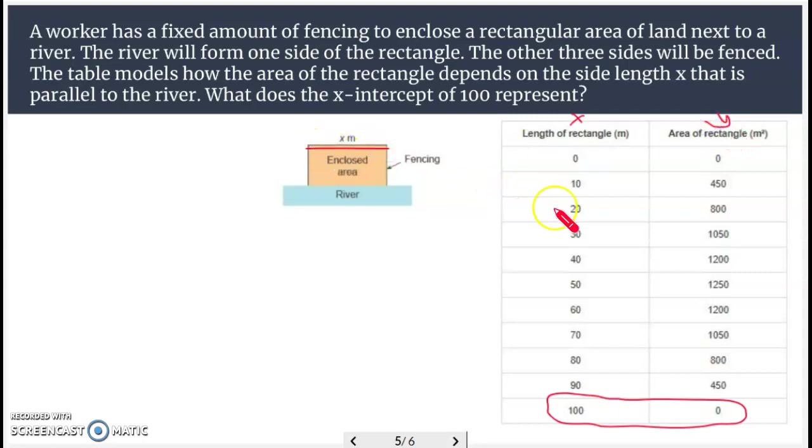All right. So here's all the different dimensions. Now say the question asked about maximum area. That would be right here at 1250. And if the length of x is 50, we'd be good to go. But down here, they say, well, what's going on here? All right. Well, that means the person only has 100 meters to work with.